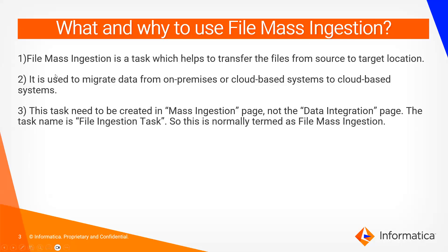File Mass Ingestion is a task which helps to transfer files from source to target locations. It is used to migrate data from on-premises or cloud systems to cloud systems. If you want to transfer a huge amount of data, you can use the File Mass Ingestion task. This task needs to be created in the Mass Ingestion page — you should not create it in the Data Integration page. The task name is File Ingestion Task, which is why we call it File Mass Ingestion.